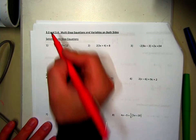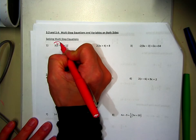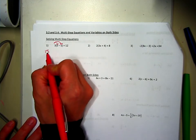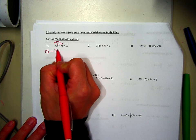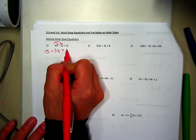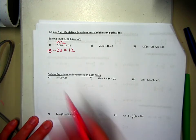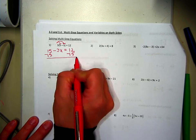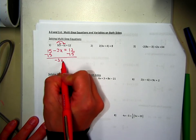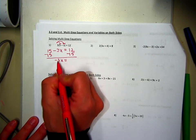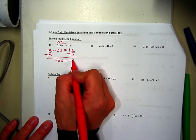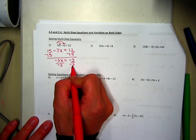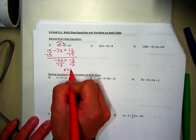The first one — I see there's a 3 in front, so I need to distribute. Your first step should be 15 minus 3x equals 12. We want to get x's on one side and everything else on the other, so subtract the negative 15 from both sides. Make sure you keep the sign in front of the negative 3x. Last step is always divide by the number in front of the x, which is negative 3, so I get x equals 1.